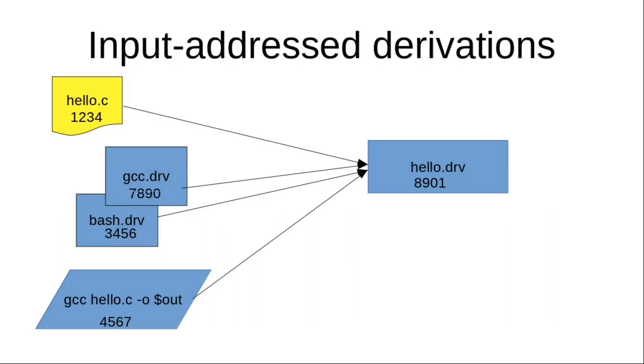But by doing that I changed the hash of the gcc derivation, and I have to rebuild gcc. But more importantly, I have to rebuild my own hello project, and I don't want to do that because what I know is that I just changed a comment, which means that the gcc executable will be the same. Which means that the output of my hello derivation will also be the same because it has, in a way, the same inputs: the same hello.c source file, the same bash derivation, the same build command.